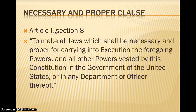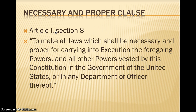Another important clause also in Section 8 is the Necessary and Proper Clause. Basically it says Congress has the power — and I'm quoting now — 'to make all laws which shall be necessary and proper for carrying into execution the foregoing powers and all other powers vested by this Constitution in the government of the United States or in any department or officer thereof.' The point of the Necessary and Proper Clause is that it expands the power of Congress not just to what the Constitution says it can do, but to anything related to those functions, and this has resulted in an expansion of the powers of Congress and the federal government.